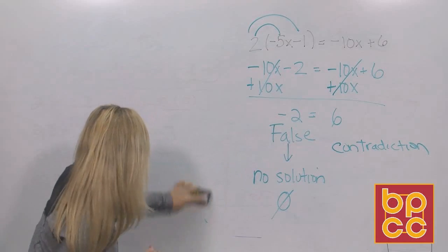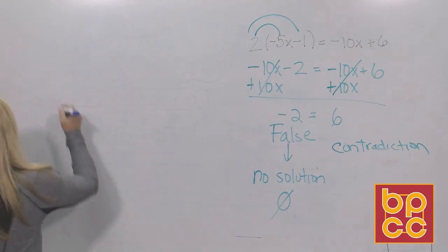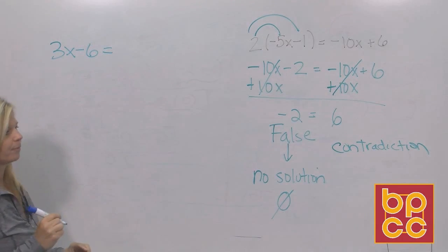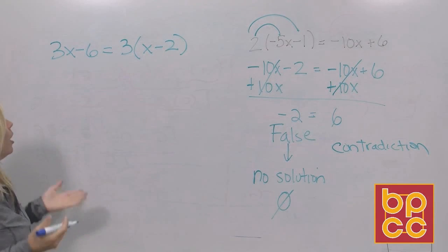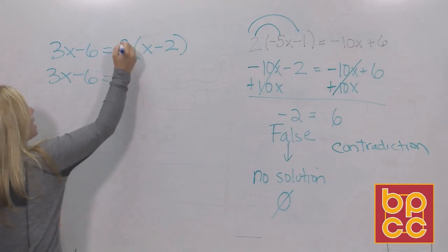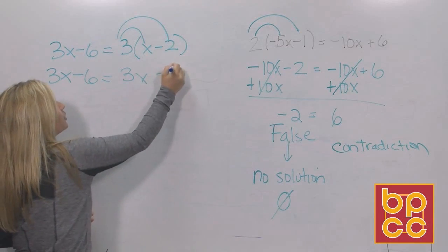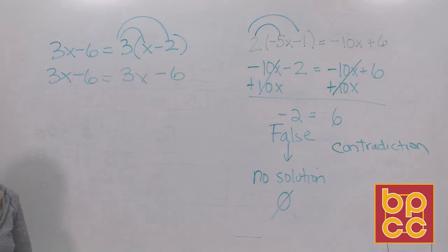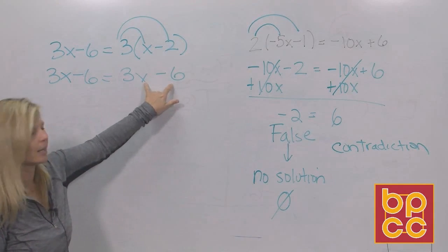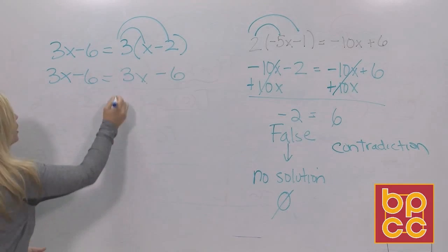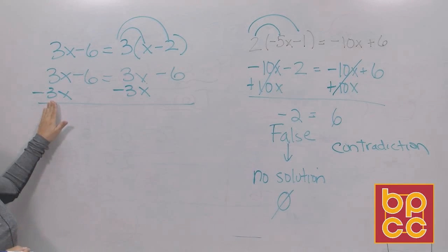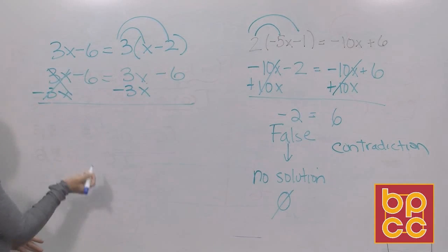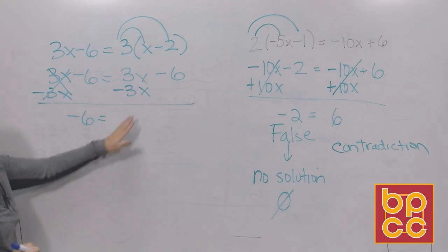Let's look at our third example. The equation is 3x minus 6 equals 3 times the quantity x minus 2. Our job is to solve it, so we follow our procedure — get rid of parentheses first. On the right side, 3 times x is 3x, and 3 times negative 2 is negative 6. No fractions or decimals, no like terms to collect. Now we move the variable to the left, doing the opposite of adding 3x, which is subtracting 3x.